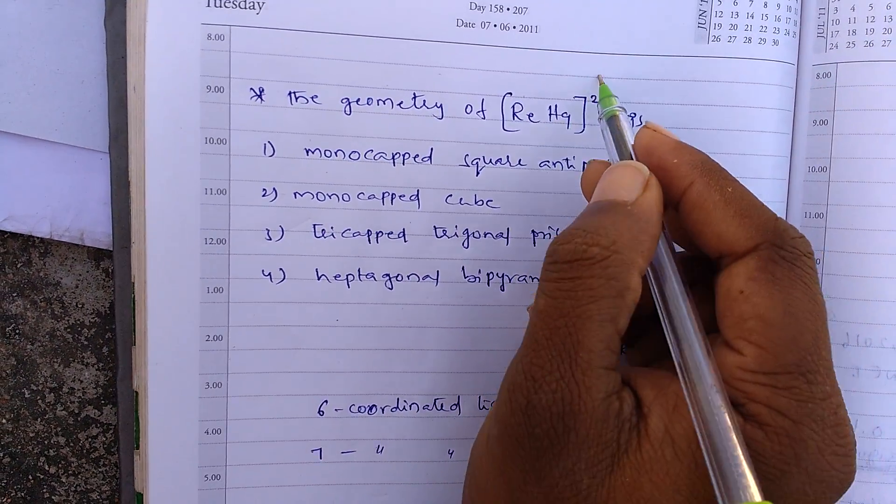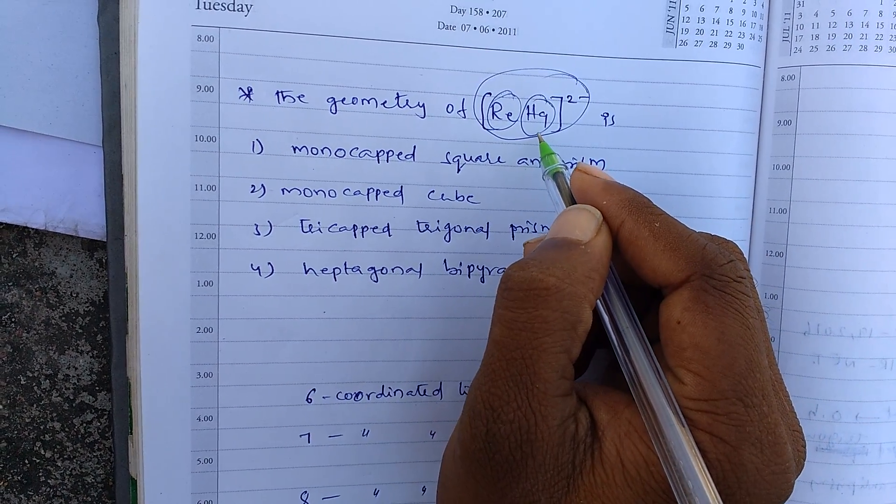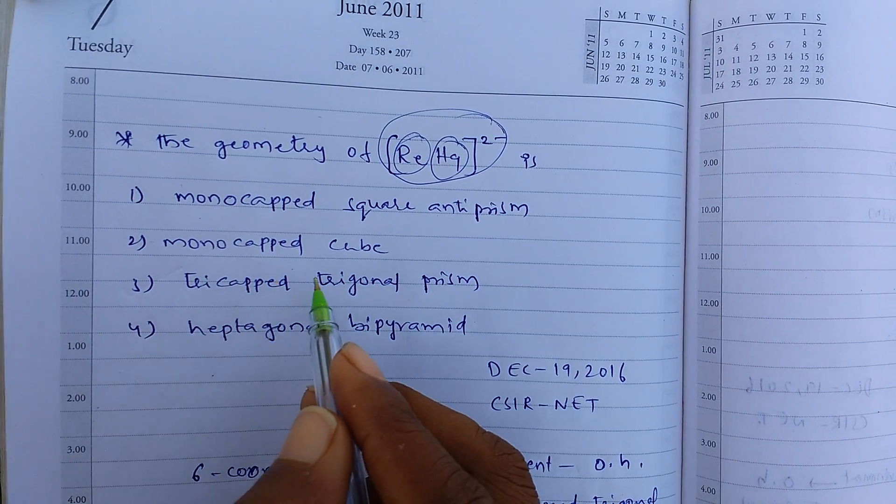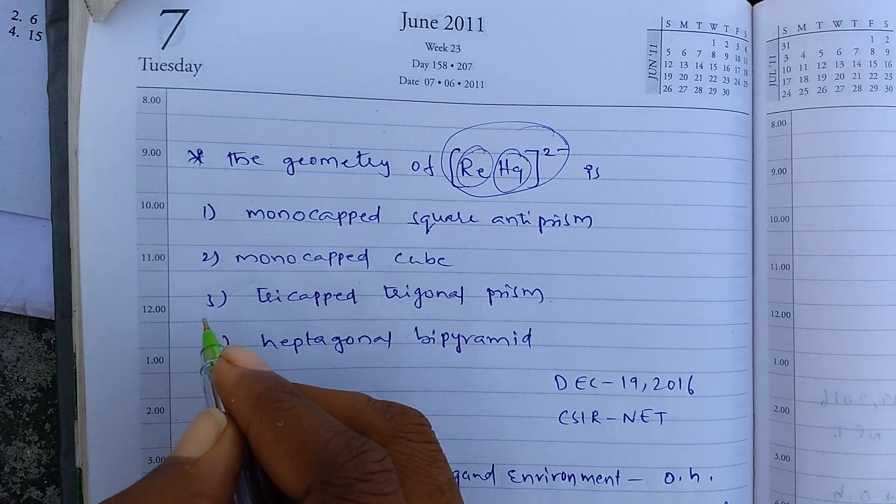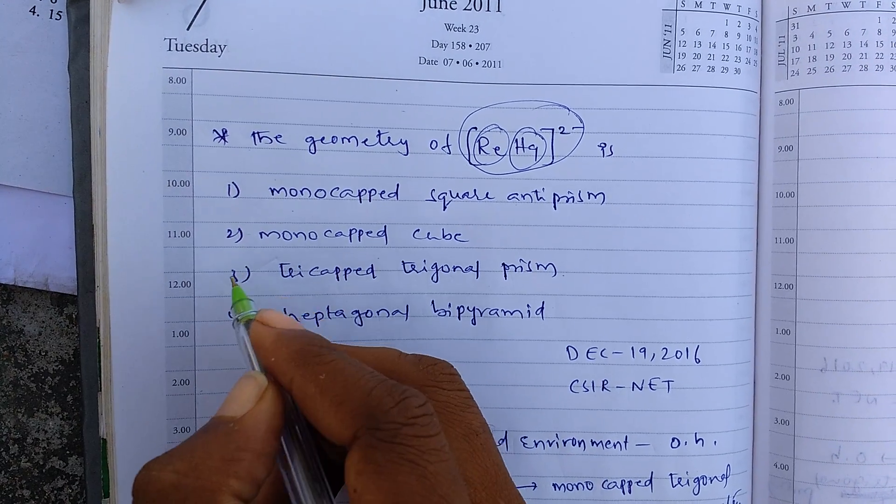So in the given complex, rhenium has 9 hydrogen ligands. So that's why it is in tricapped trigonal prismatic structure. So the geometry of given complex is tricapped trigonal prism.